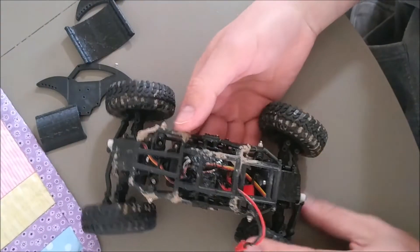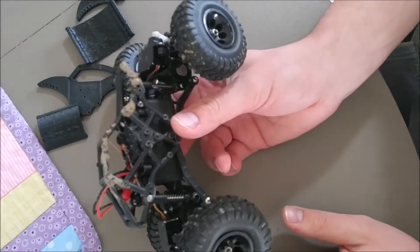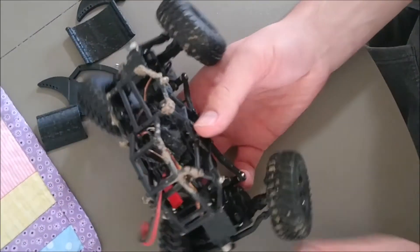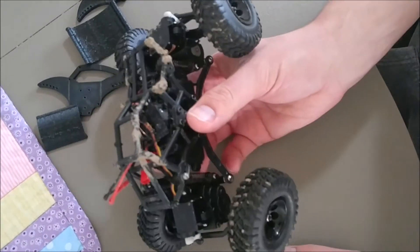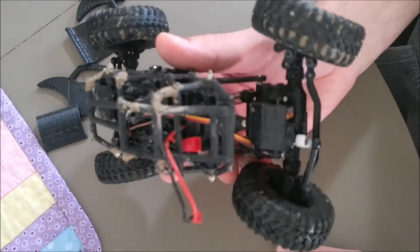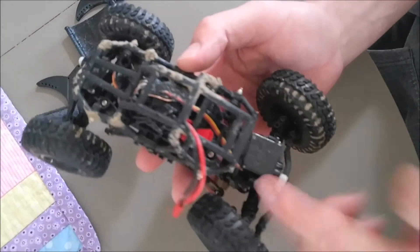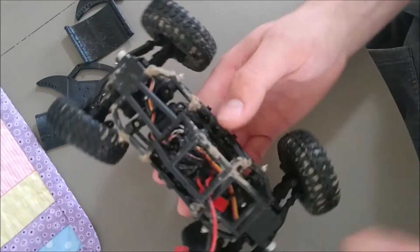All right guys, so what you see here is my Basher Rockstar. It's a 1/24th scale rock crawler and I took the metal plates off of it. But other than that, I haven't really done much to the body. I have different tires on it and I built it from a kit. So I have servos and electronics and all that.